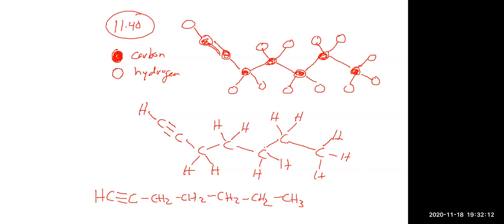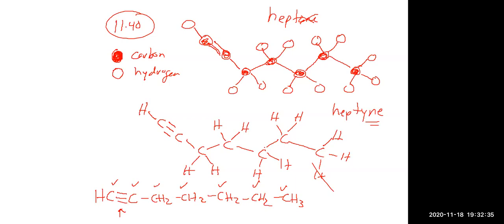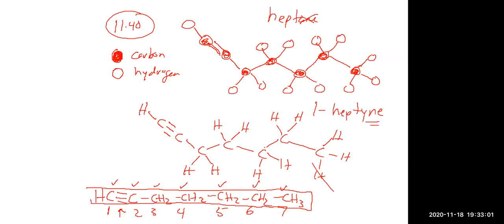So they wanted you to name this. We want the longest continuous carbon chain: one, two, three, four, five, six, and seven — so that should be heptane. It does have a triple bond, so heptane becomes heptyne because of the triple bond. We always want to give the triple bond the smallest number, so numbering from this end it would be 1-heptyne as the name, since there are no other groups attached.